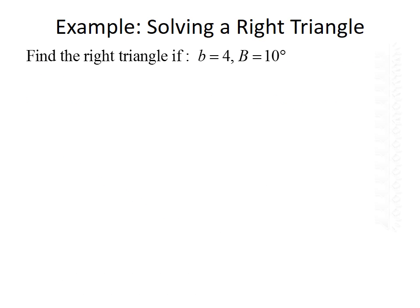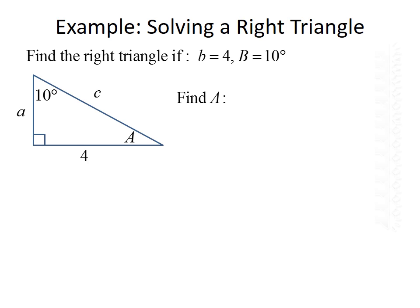Let's use that information and solve a right triangle. Find the missing information given that side B is equal to 4 and angle B has a measure of 10 degrees. First, let's sketch this triangle. We'll have angles A, B, and C, where angle B is 10 degrees and angle C is our right angle, with sides a, b, and c, where side B equals 4 and side a is across from angle A. We need to find angle A, side a, and side C.